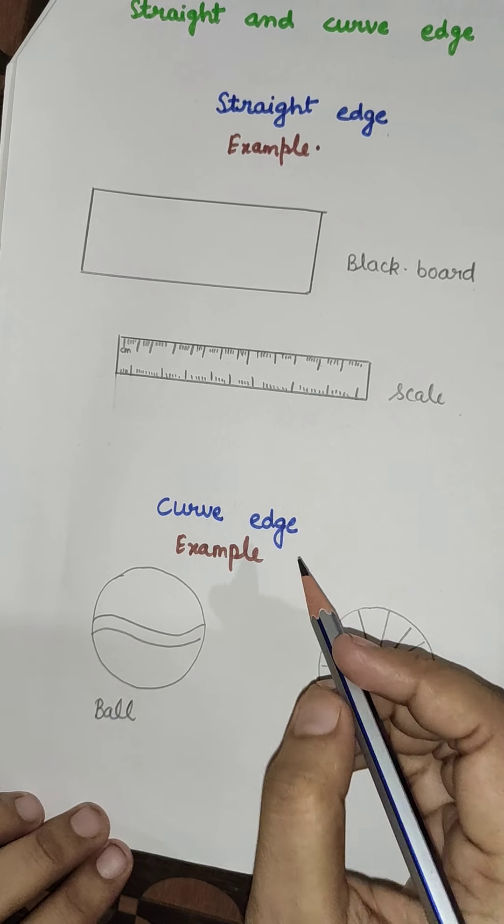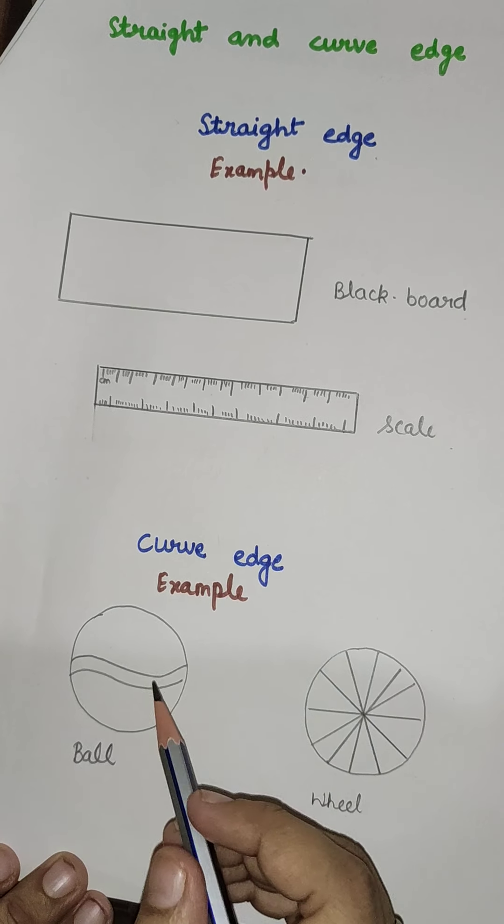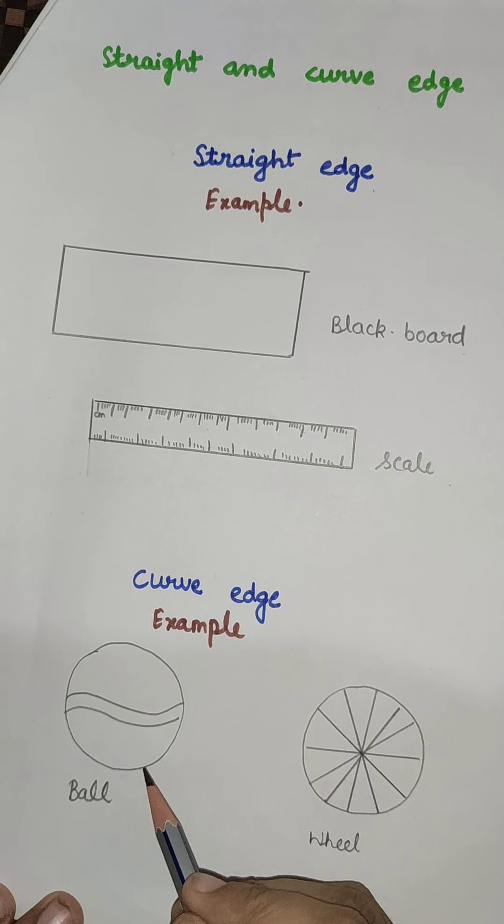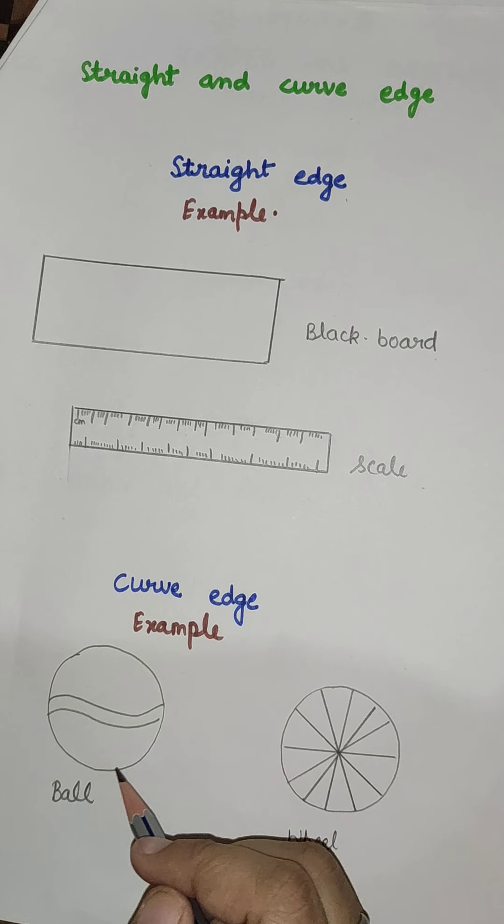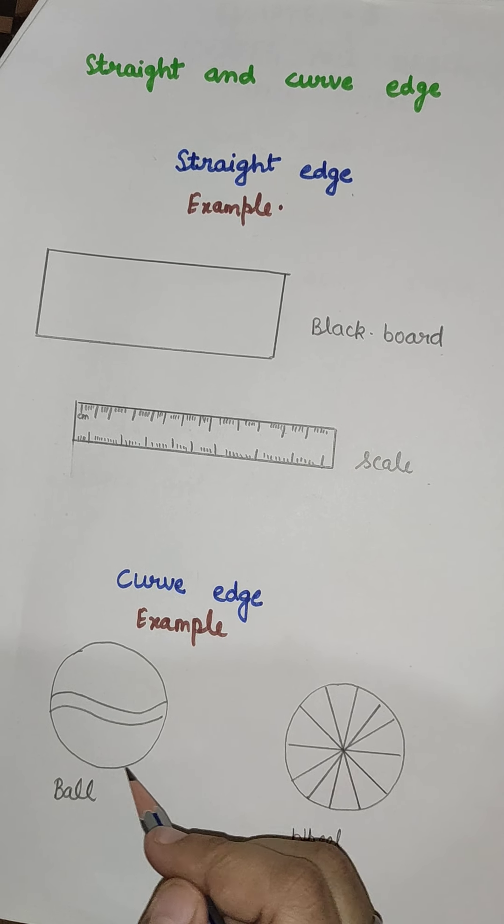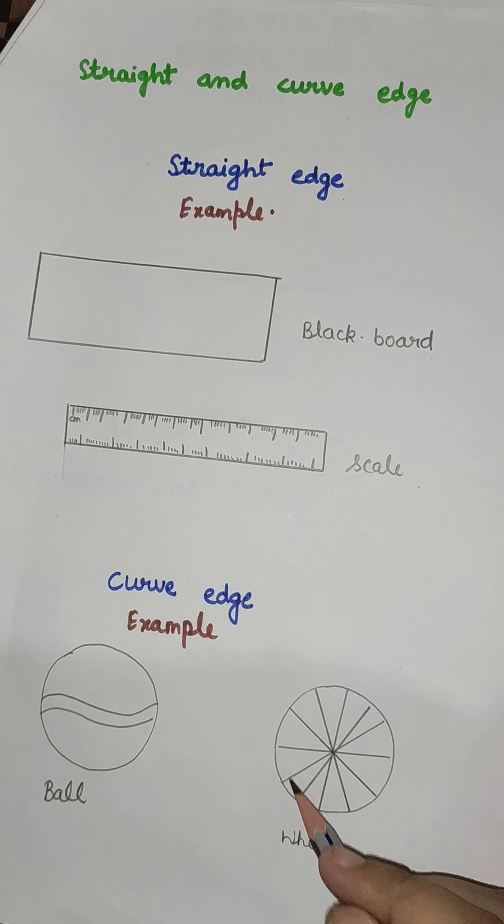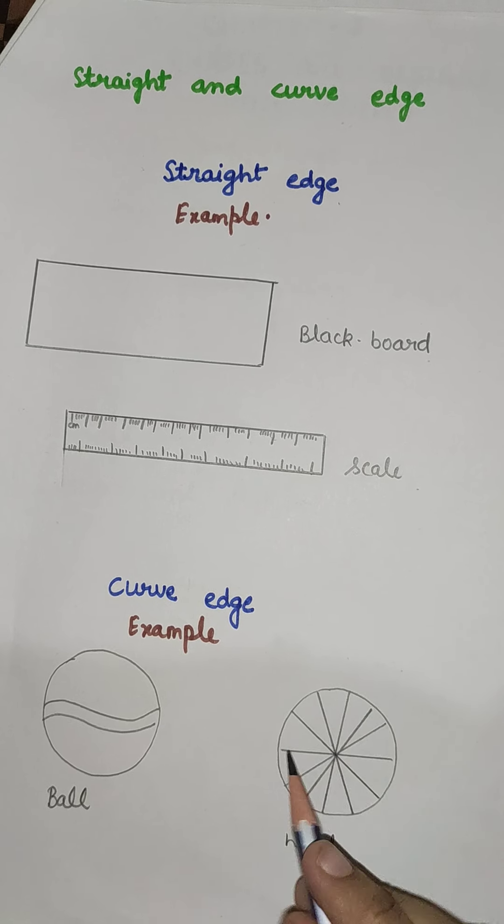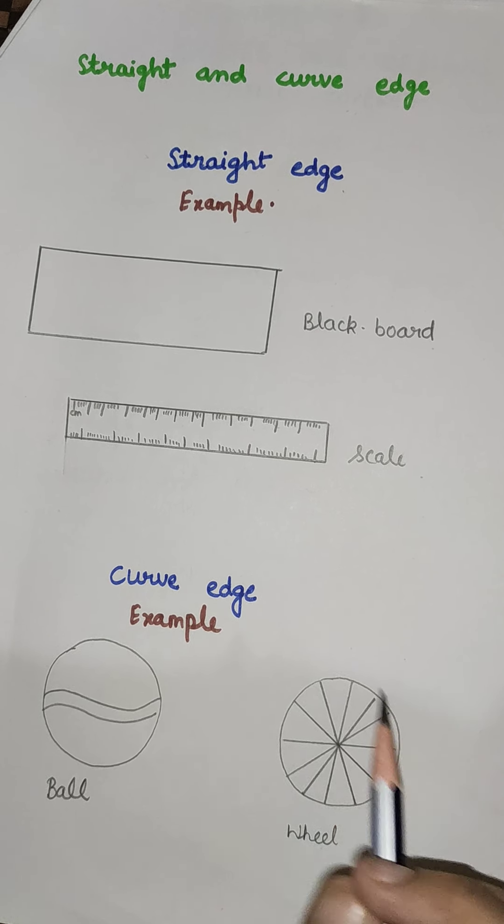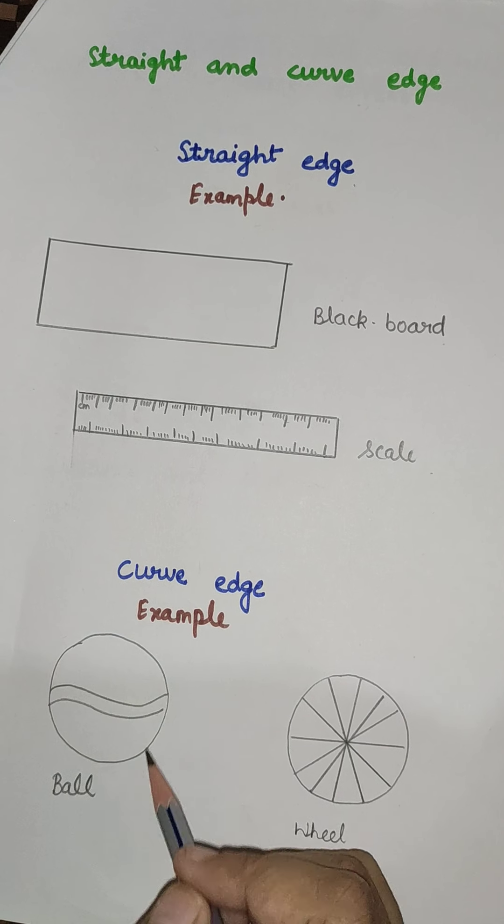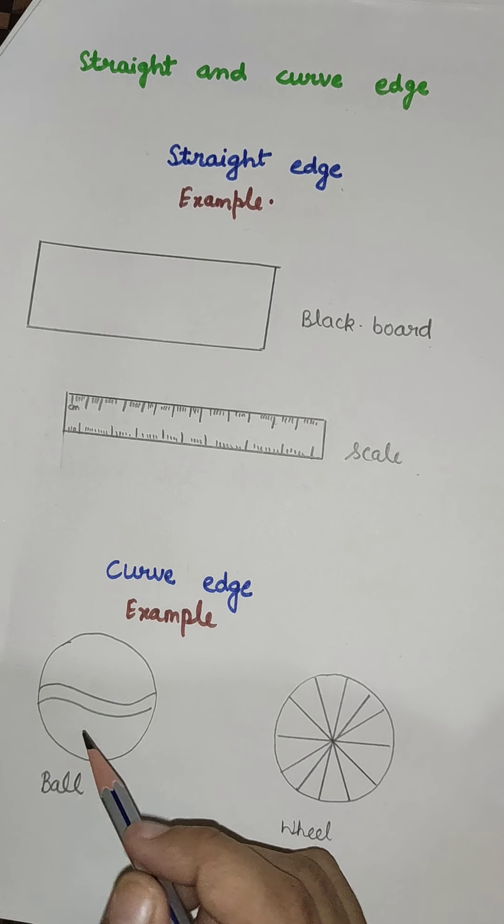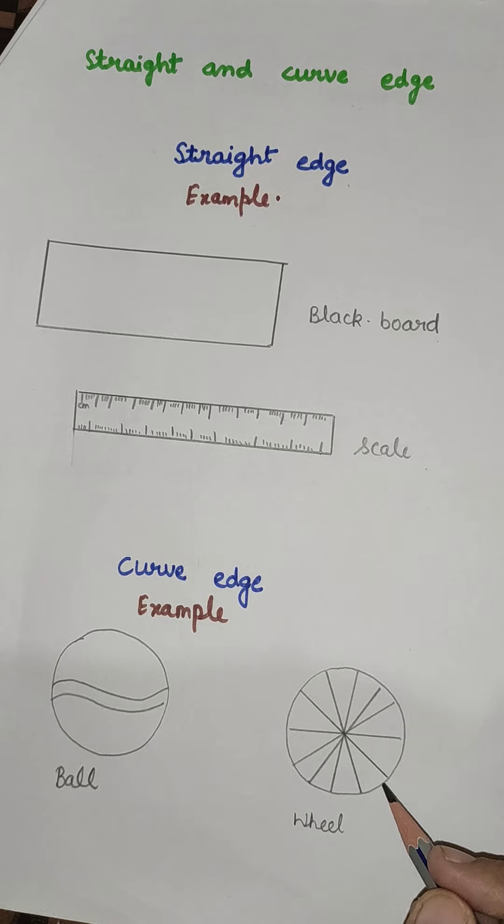And what is curved edge? The curved surface is a rounded surface which is not flat. This is a curved surface and it is not flat. This is a straight edge. This is curved. So, it is a curved surface.